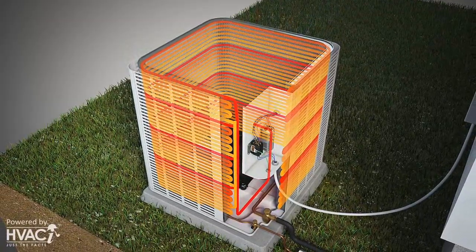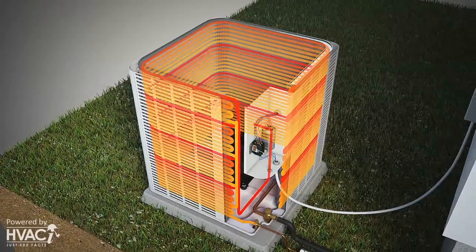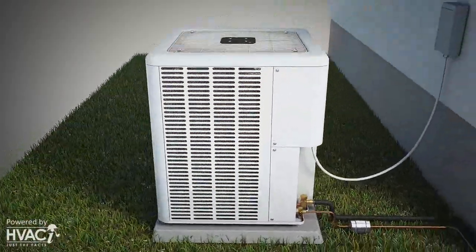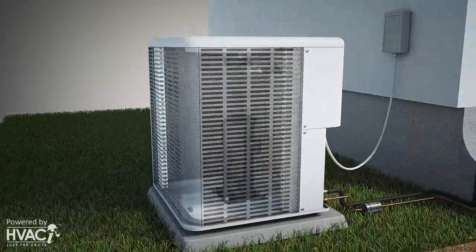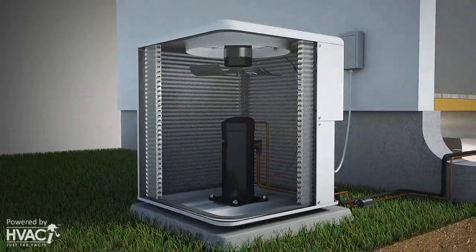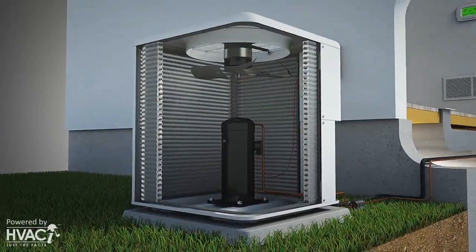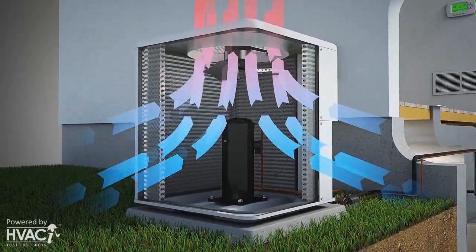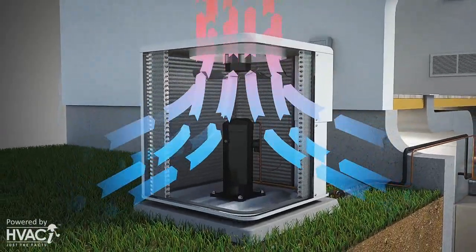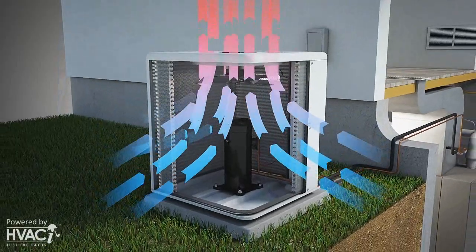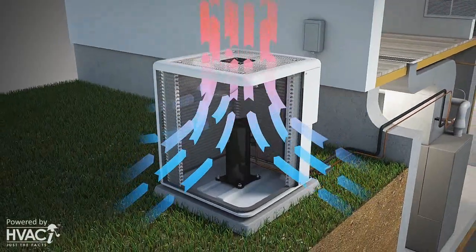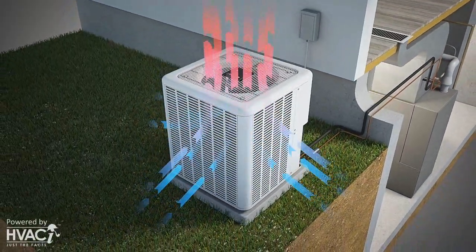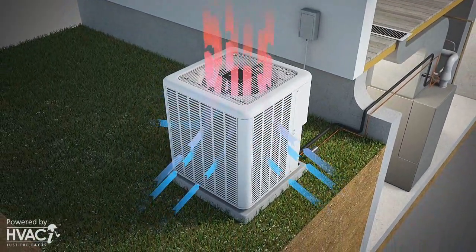The unit's fan then begins to turn, pulling ambient air across those copper coil tubes. As the air passes over the hot refrigerant lines, the heat transfers away from the refrigerant to the passing air and is ejected out of the top of the condensing unit.